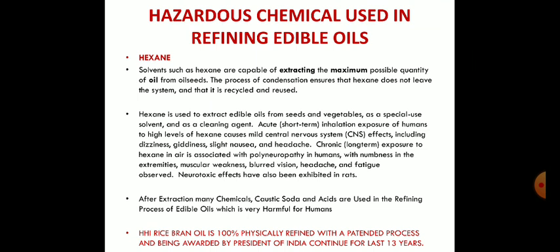Now, we are talking about refining — but conventional refining uses very dangerous chemicals. Every time seeds like palm, sunflower, or brown rice are processed, they are extracted using a very dangerous chemical called hexane. Hexane is a petroleum product used as a solvent to extract the oil.